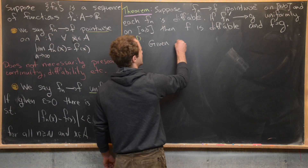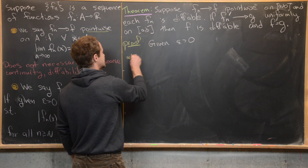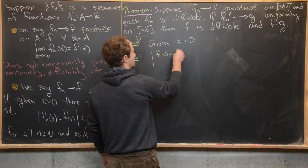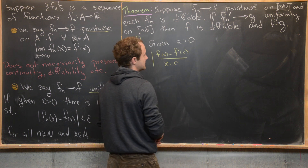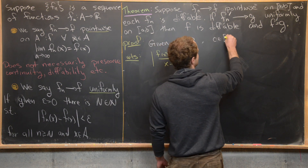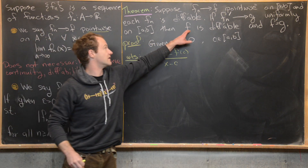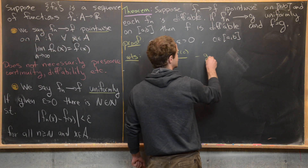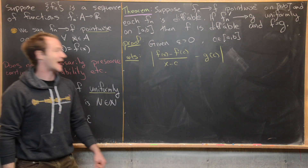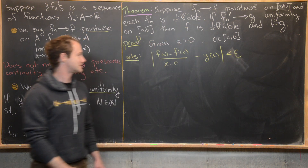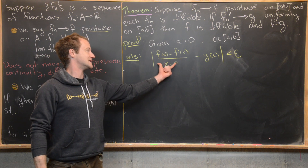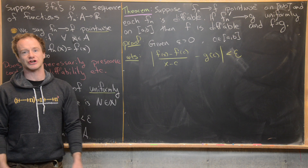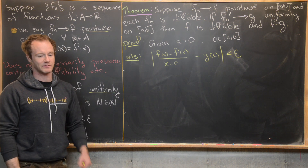Let's lay out the proof idea. Given epsilon greater than zero, what we want to show is the following inequality: the absolute value of (f(x) minus f(c)) over (x minus c) minus g(c) can be made less than epsilon. Here c is a point in [a,b] where we want to differentiate f. If we can make that difference arbitrarily small, then as x approaches c, that difference quotient approaches g(c), meaning f'(c) equals g(c).